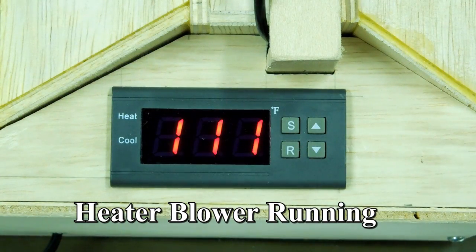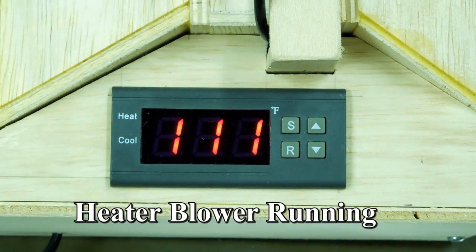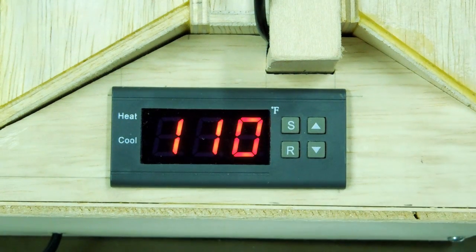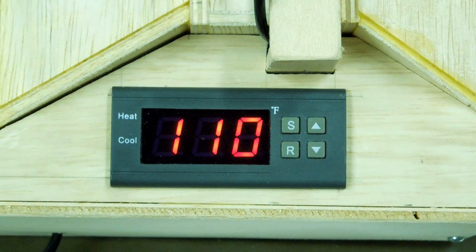When you get the instruction sheet for this, it's not necessarily straightforward as to how this works. You have an S and an R which is a set and a reset button, and the up and down arrows which is to increment through your settings.